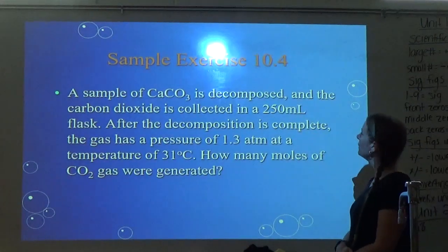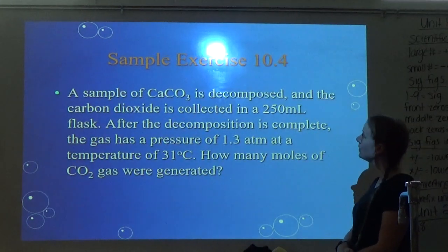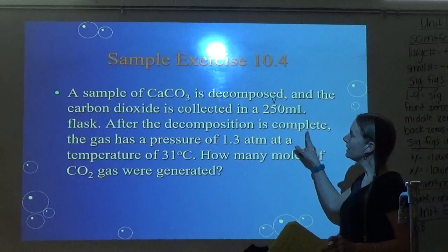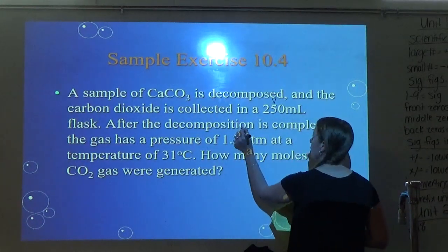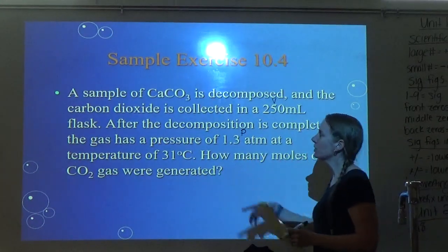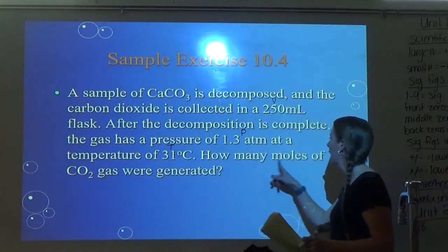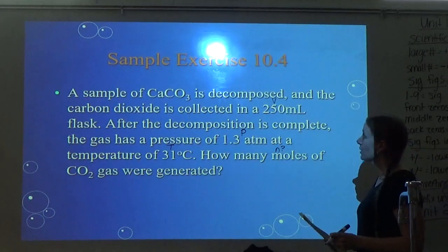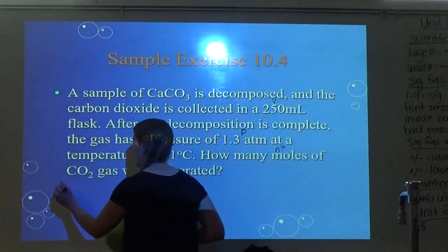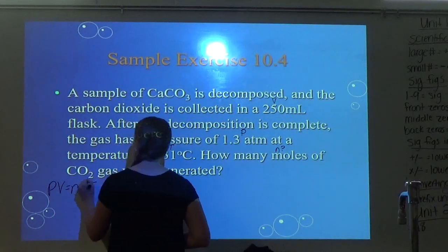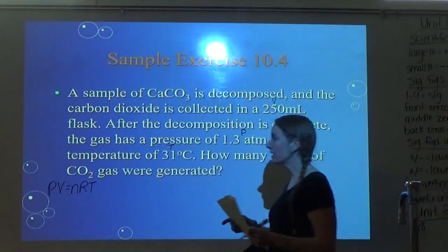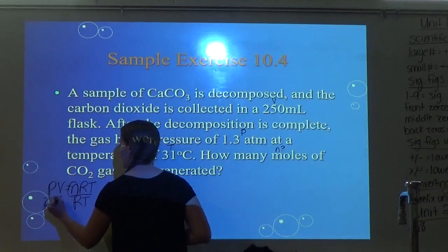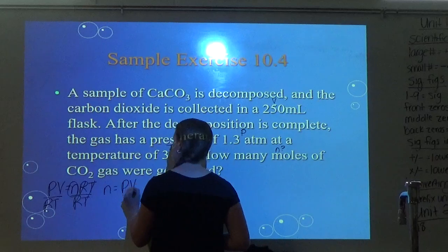A sample of CaCO3 is decomposed and the carbon dioxide is collected in a 250 milliliter flask — that's the volume. After the decomposition is complete, the gas has a pressure of 1.38 atm — that's the pressure. At a temperature of 31 degrees Celsius — that's the temperature. How many moles of gas were collected? That's what I'm solving for, N. I'm ready to use PV equals NRT.